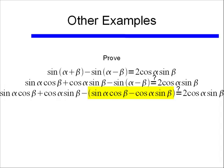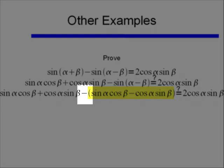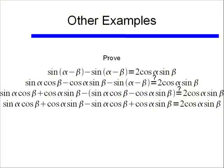And since sin(α-β) is subtracted from sin(α+β), we need to make sure we remember to use the distributive property. So I end up with sin(α)cos(β) + cos(α)sin(β) - sin(α)cos(β) + cos(α)sin(β).